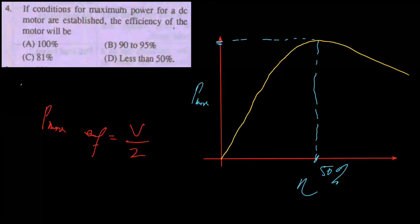Next MCQ: If conditions for maximum power for a DC motor are established, the efficiency of the motor will be — 100%, 90–95%, 81%, or less than 50%? The answer is less than 50%, so option D is correct.